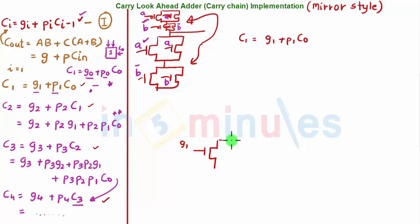my g1, this is my p1, this is my c0. So this becomes my pull-down network and I know that I get an output not c1 but c1 bar. So pull-up will look exactly the same here and